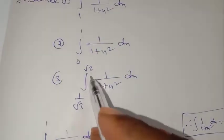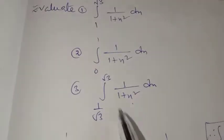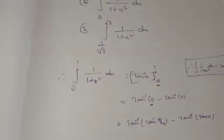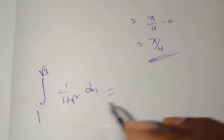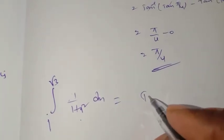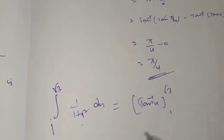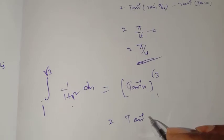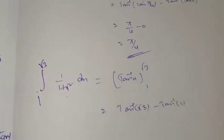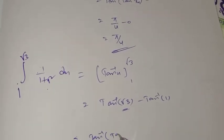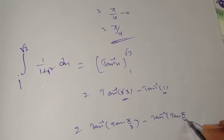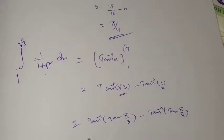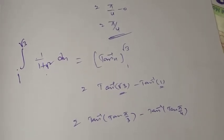Next problem: same integral ∫1/(1+x²)dx but with limits changed to 1 to √3. We get tan inverse x from 1 to √3. Substituting: tan inverse of √3 minus tan inverse of 1. tan inverse of √3 is π/3, and tan inverse of 1 is π/4. So the answer is π/3 minus π/4, taking LCM 12, that is 4π minus 3π by 12, equal to π/12.